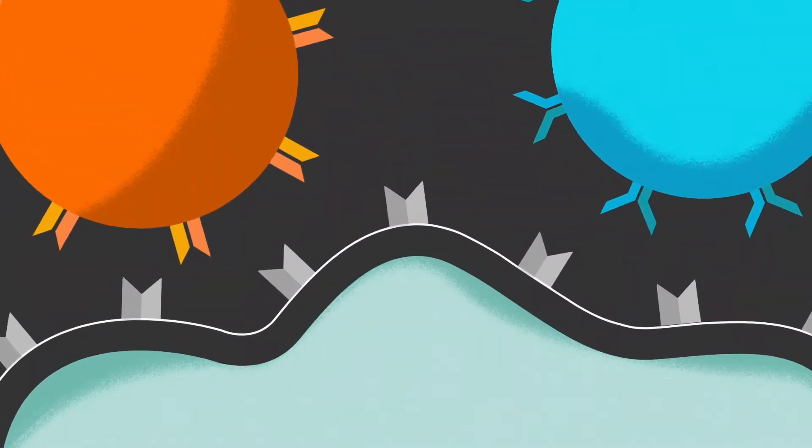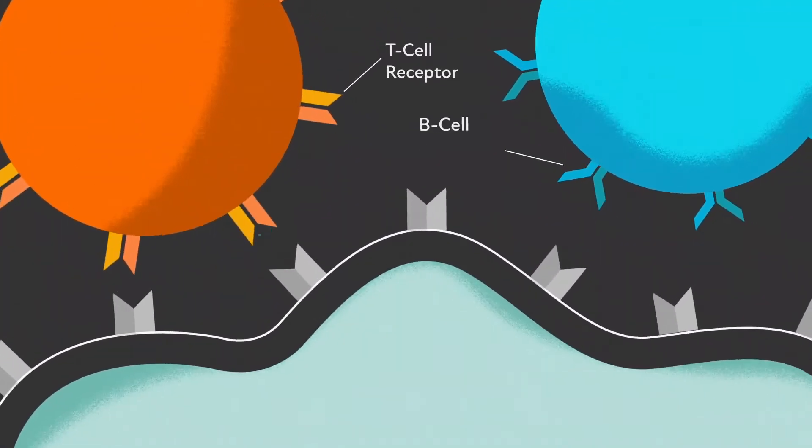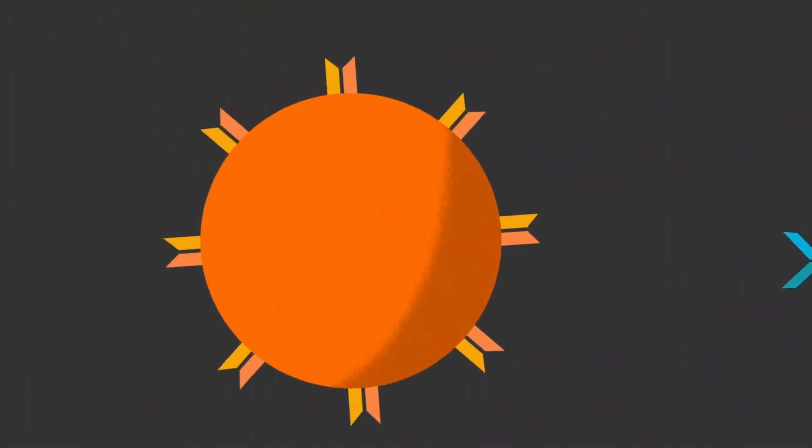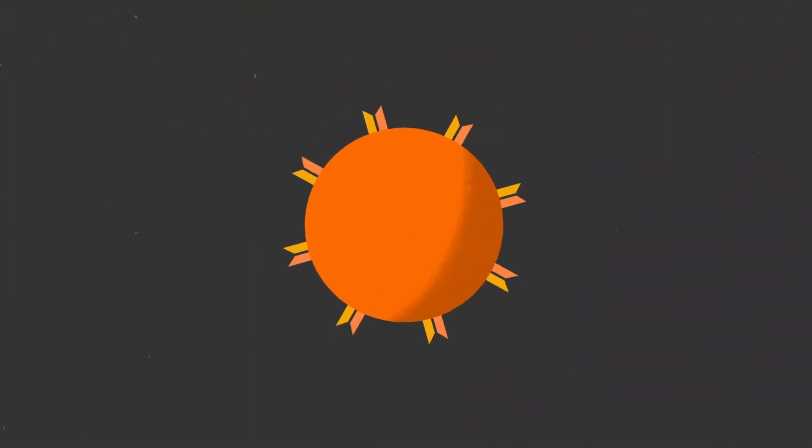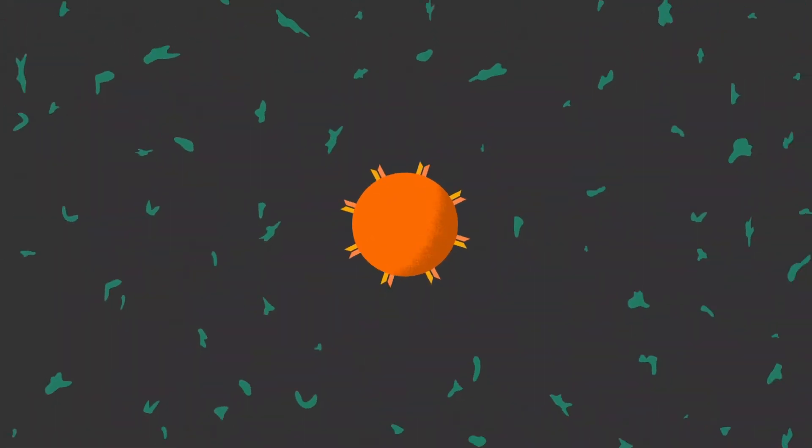T and B cells have receptors, TCRs and BCRs, which can recognize one or a small number of the millions of antigens to which our bodies are continuously exposed.